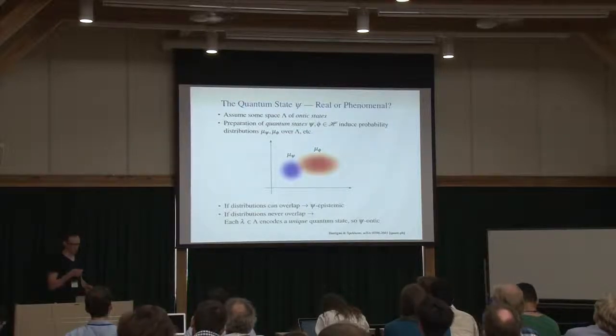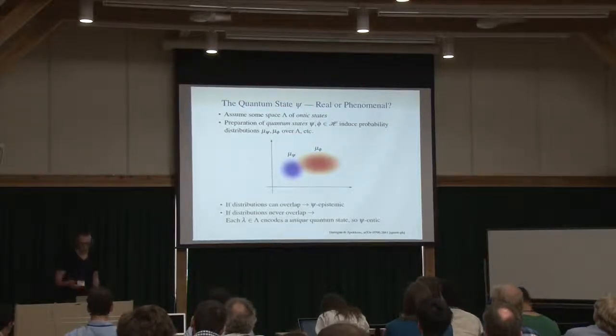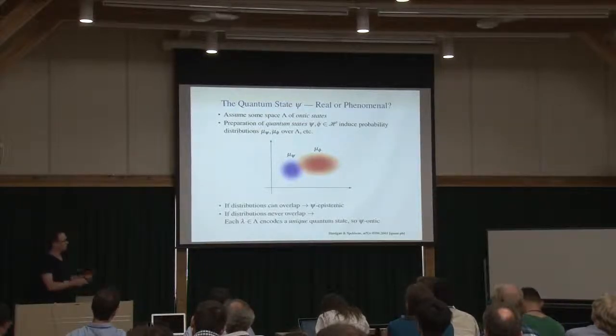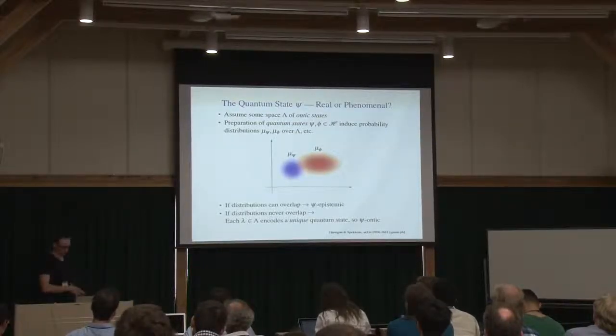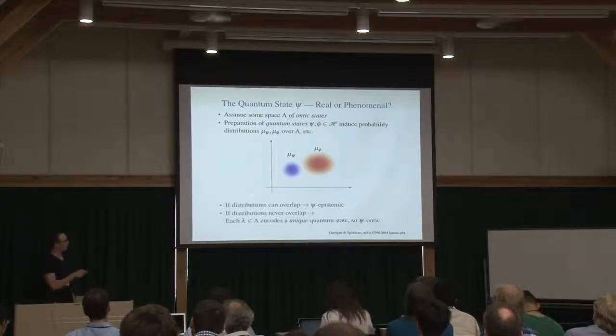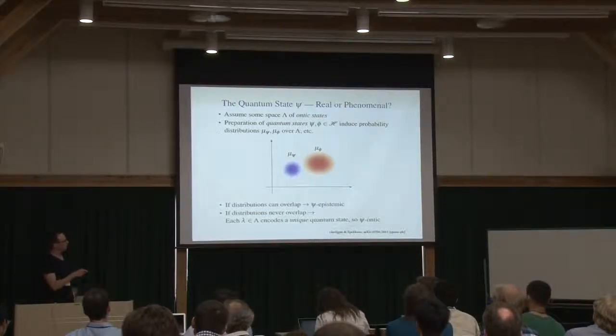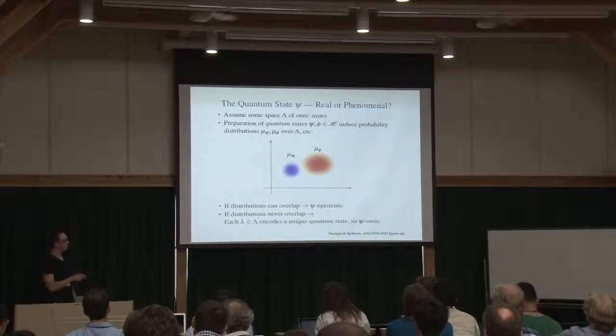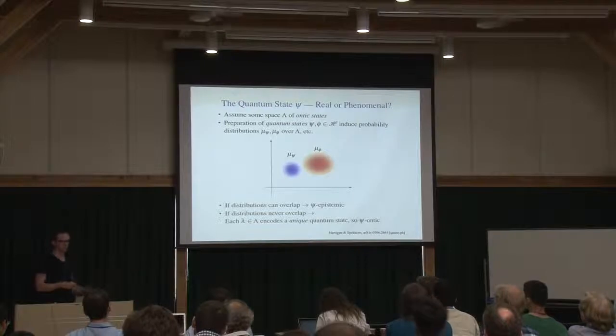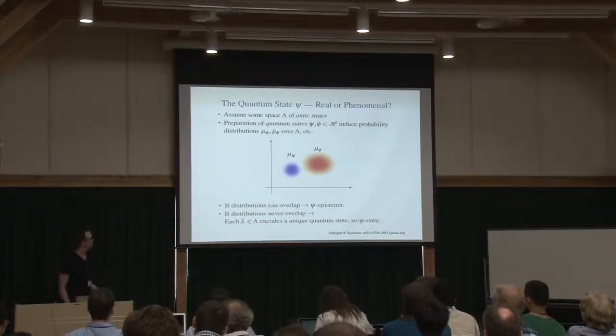On the other hand, if it can be shown that the distributions never overlap, well then no matter where I am in this ontic state space, the ontic state encodes uniquely the quantum state. So we might as well just think of the quantum state as an aspect of physical reality. That's the idea.